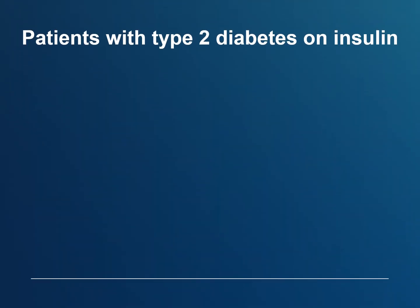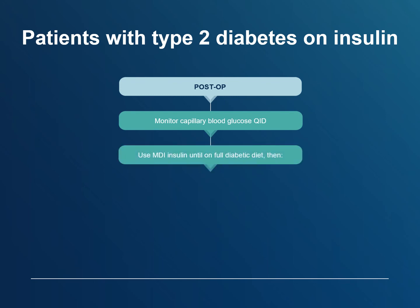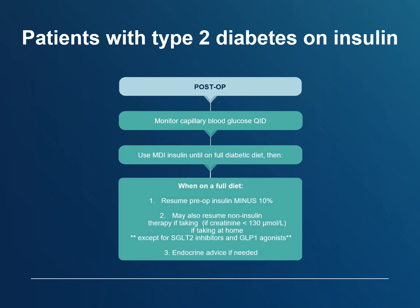Type 2 diabetes on insulin: Order QID capillary blood glucose monitoring for all patients and use a multi-daily injection insulin regimen until they tolerate a full diabetic diet. Then resume the preoperative insulin regimen, but only give 90% of the preoperative insulin dose to start. The patient may also resume non-insulin medications if renal function has normalized. If creatinine remains over 130, use only linagliptin 5 mg per day until renal function normalizes. If in doubt, contact endocrinology for advice. In all cases, make sure the patient receives appropriate diabetes education and follow-up with their family physician after discharge from the hospital.